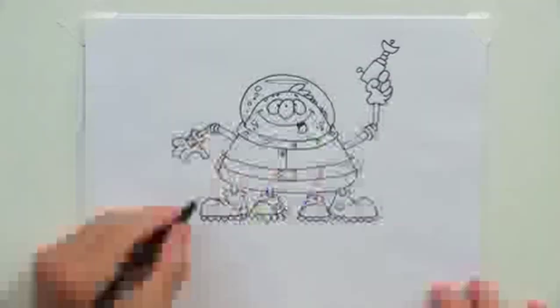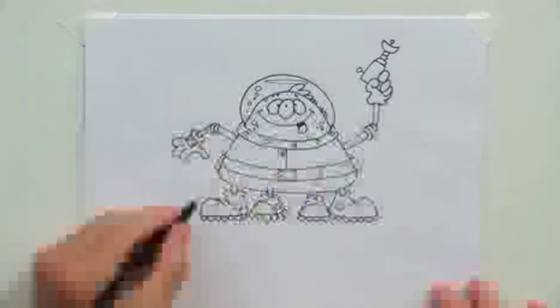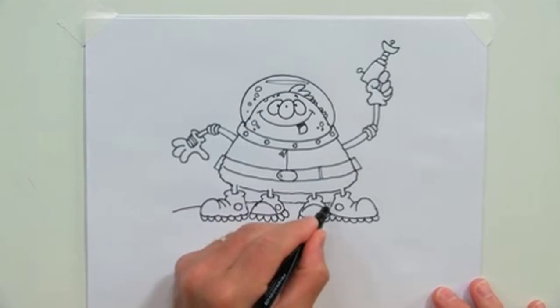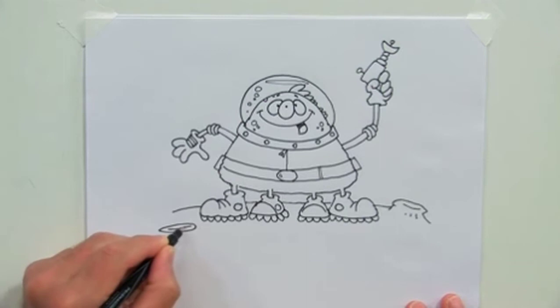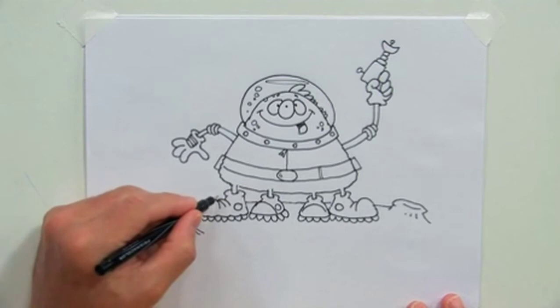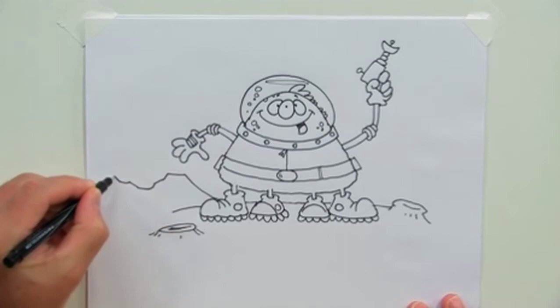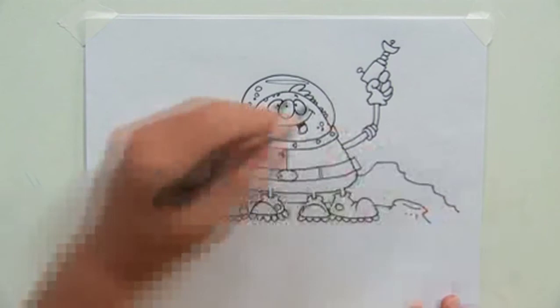It might be kind of fun if we put him on a planet surface here. So let's draw a few craters around him. There's one right there. And let's put a couple in front of him here. That goes like that. Draw the inside of the crater there. The outside like that. And we'll put a little landscape behind him like that. And another one over here like this.